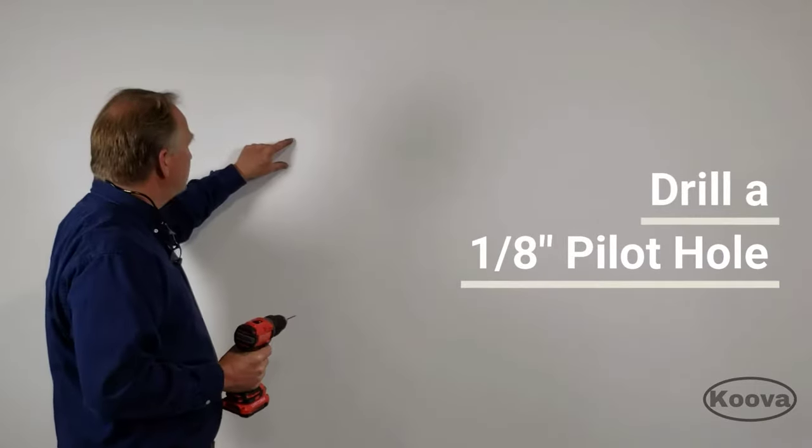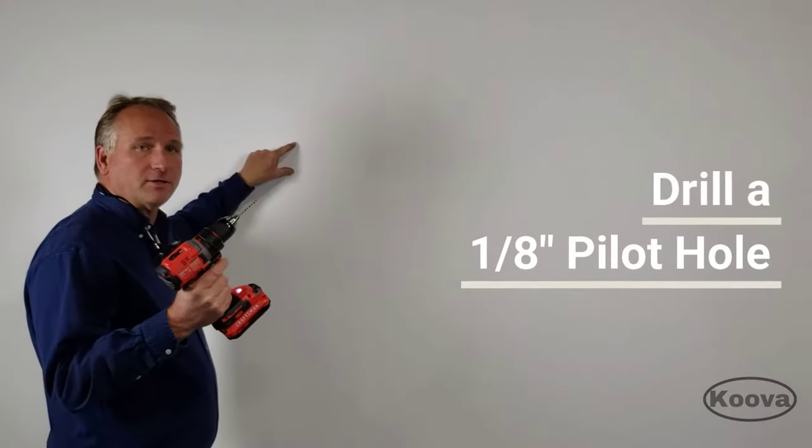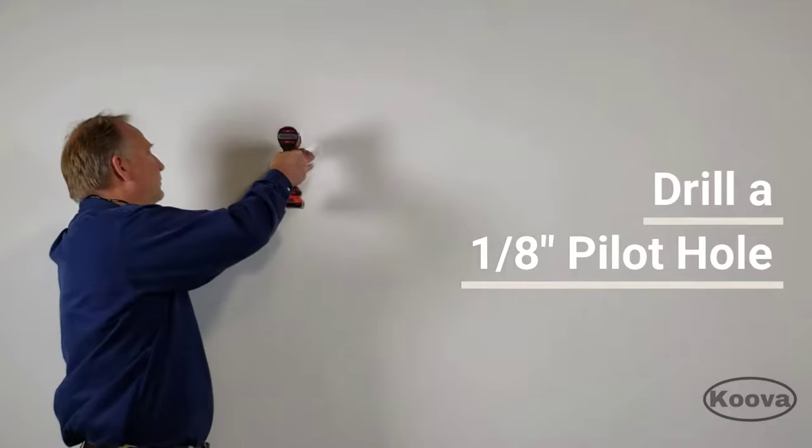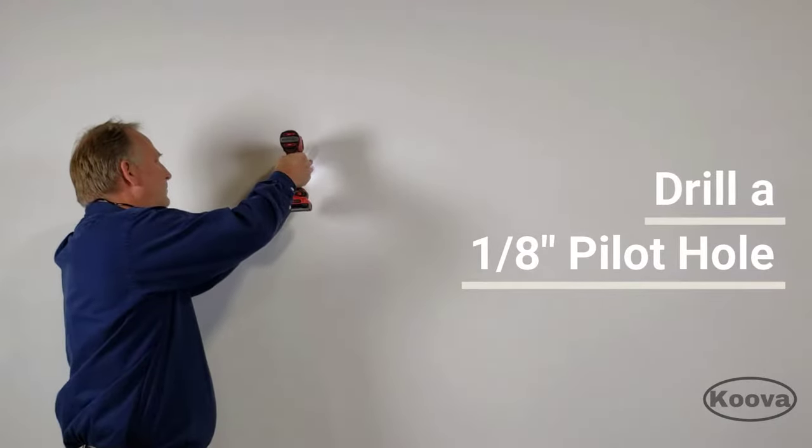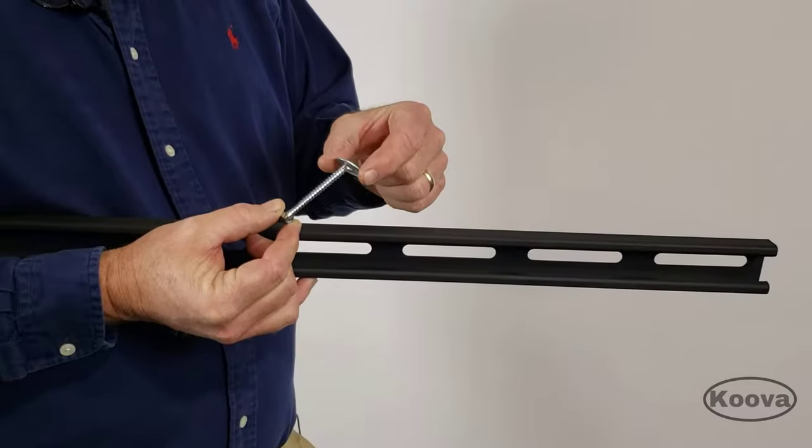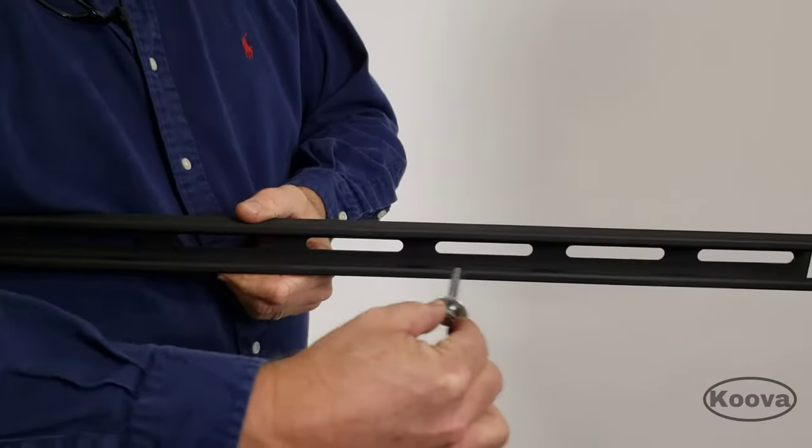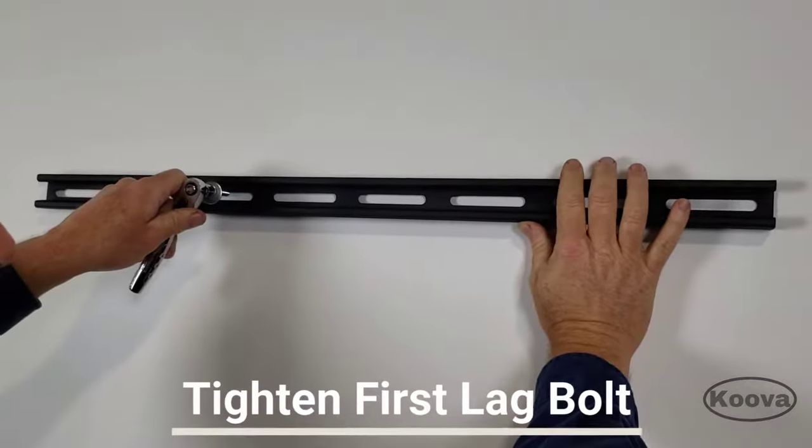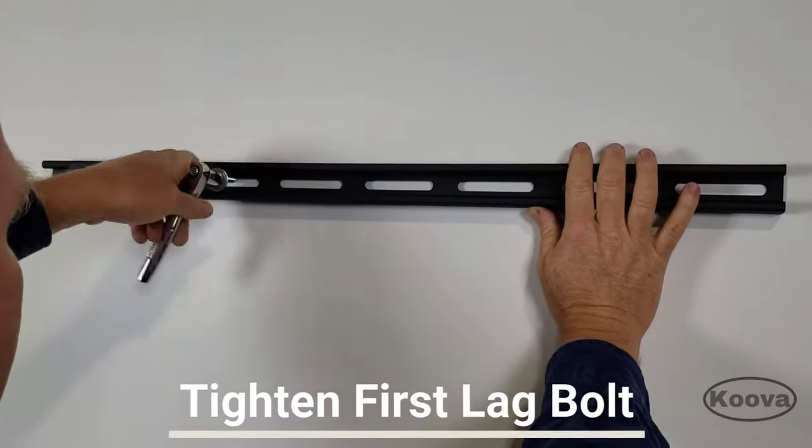The next step, once you've found your mark, is to drill a 1/8-inch pilot hole. Then take a washer, put it on the lag bolt, and position it where you want it. Now holding it about level, just tighten up the lag bolt.